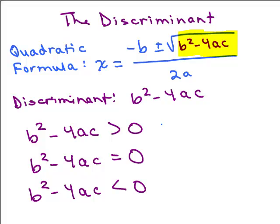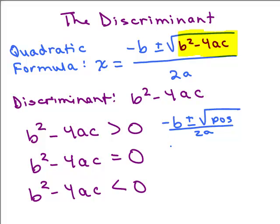If you think about the quadratic formula, looking just at the numerator, it's going to be negative b plus or minus the square root of some positive number, all over 2a. Whatever b is, you're going to add some positive number to it, and that will be different than when you subtract that positive number. So when the discriminant is greater than 0, you're going to get two different solutions, and since you're taking the square root of a positive number it will be real. So when b squared minus 4ac is greater than 0, you get two real solutions.